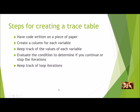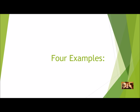Here are the steps for creating a trace table. First, it's really helpful to have the code already written on a piece of paper. You're going to create a column for each variable and keep track of the values of each variable as you hand trace. You're going to evaluate the condition of your loop to determine if you continue or if you stop, and you are going to keep track of your loop iterations. A trace table will help you answer all kinds of questions, whether on a test or as you're working on your programs. So let's take a look at four examples.